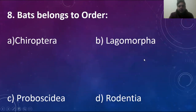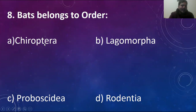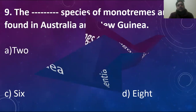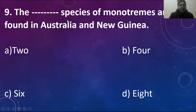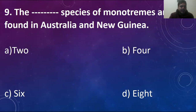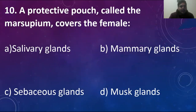Bats belong to order — not Lagomorpha, because Lagomorpha is the order of rabbits; Proboscidea is the order of elephants; and Rodentia is the order of beavers and rats. I'm sure the order of bats is Chiroptera. So Chiroptera is the order to which bats belong. The blank species of monotremes are found in Australia and New Guinea — there are almost six species of monotremes found in Australia and New Guinea.